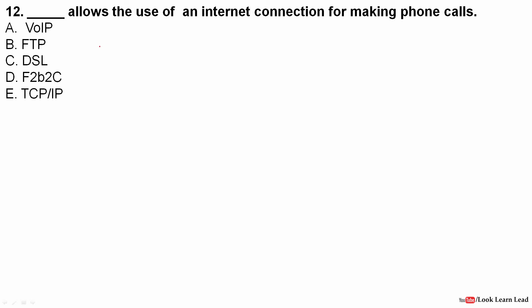Next question: Dash allows the user of an internet connection to make phone calls. This is easy — the answer is Voice over IP (VoIP).